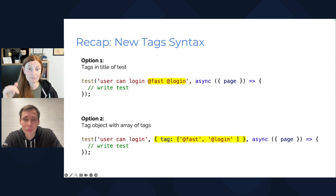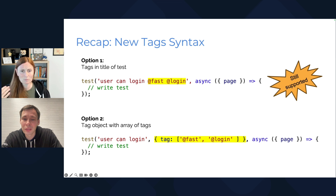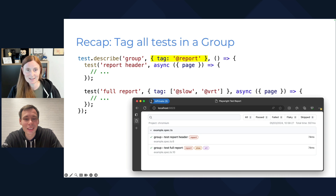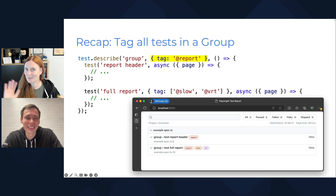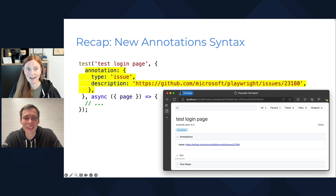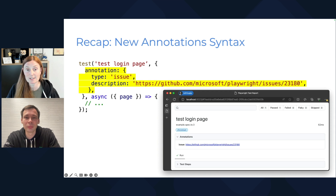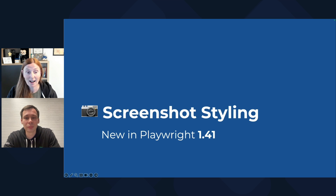Just to recap: @fast, @login is the tag — that was previously in the test title, and now we can put it into a tag object right after the title. The first syntax is still supported, so no breaking changes. You can still use it if you prefer, but the new syntax is nicer and cleaner. It also works well in a describe block — put the tag there and all the tests will get it. For annotations, create an object with annotation right after the title, and when you skip your test you'll still get that annotation.